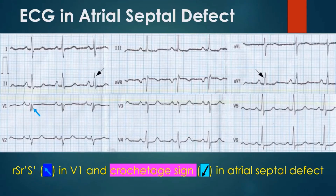ECG shows R, S, R-prime, S-prime in V1 and the crochet touch sign in atrial septal defect.